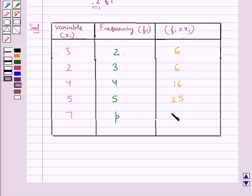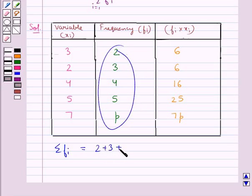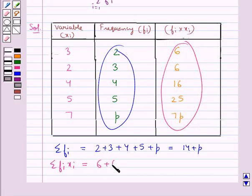Then we have summation fi is equal to the sum of these numbers, that is 2 plus 3 plus 4 plus 5 plus p, and this is equal to 14 plus p. Then summation fi xi is equal to the sum of these numbers, that is 6 plus 6 plus 16 plus 25 plus 7p, and this is equal to 53 plus 7p.